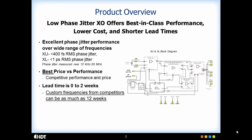The XU and XL offer a better price point than other oscillators in these performance categories, while having a typical lead time of stock to 2 weeks for standard and custom frequencies, while custom frequencies from competitors can be as much as 12 weeks.